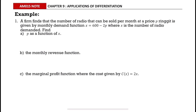Example 1: A firm finds that the number of radios that can be sold per month at a price p ringgit is given by the monthly demand function x = 600 − 2p, where x is the number of radios demanded. Find p as a function of x from the given demand function.